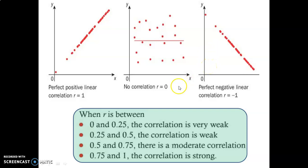As a reminder, the guidelines were: between 0 and 0.25 is considered a very weak correlation, between 0.25 and 0.5 weak correlation, between 0.5 and 0.75 moderate correlation, and 0.75 to 1 strong correlation.